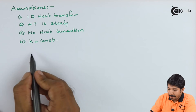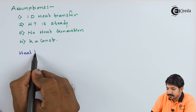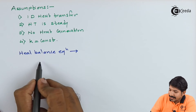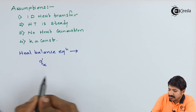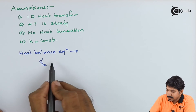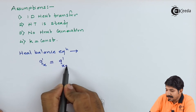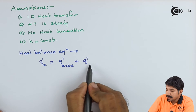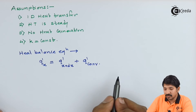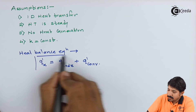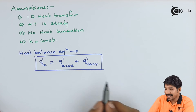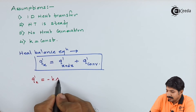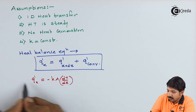With these assumptions in mind, let us write down the heat balance equation. Q of X, the heat going inward to the small elemental strip, is equal to Q of X plus dx — the heat going outward — plus Q of convection, which is the heat removed to the fluid around it. This is the heat balance equation from the diagram.